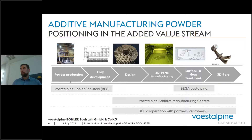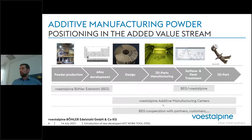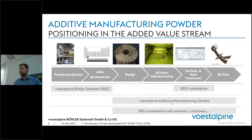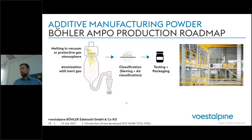We see ourselves in the additive value-add stream at powder production and alloy development. We have a large R&D capability allowing us to develop materials specifically dedicated to 3D printing. For the other steps in the value-added chain — design, parts manufacturing, surface and heat treatment — we work together with our Voestalpine additive manufacturing competence centers and with cooperation partners including Elementum 3D.